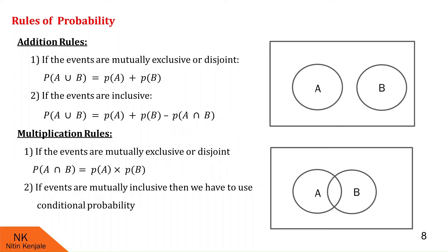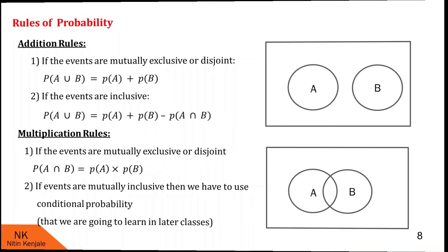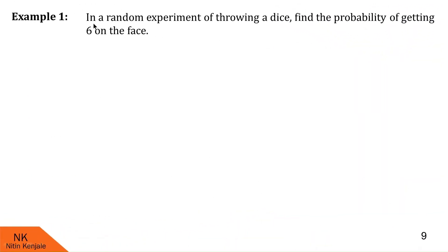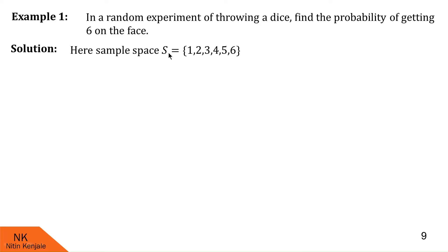Now let us proceed to some examples. In the first example, in a random experiment of throwing a dice, find the probability of getting 6 on the face. First, we note down all possible outcomes in the sample space. The sample space consists of numbers 1, 2, 3, 4, 5, and 6. Any other outcome is an impossible outcome. Since there are 6 elements in the sample space, N of S equals 6.